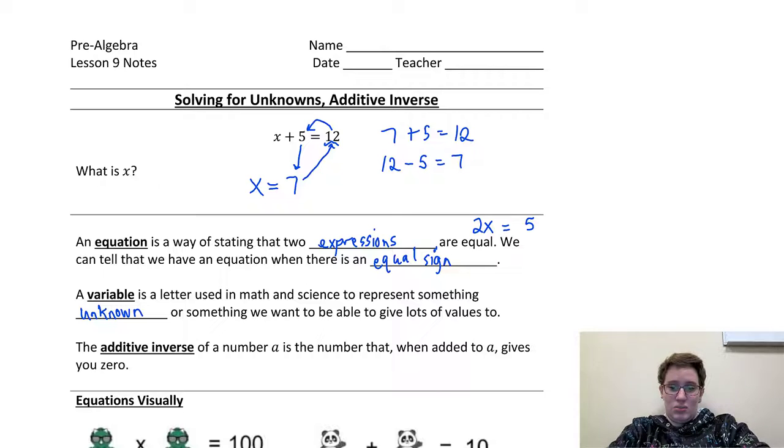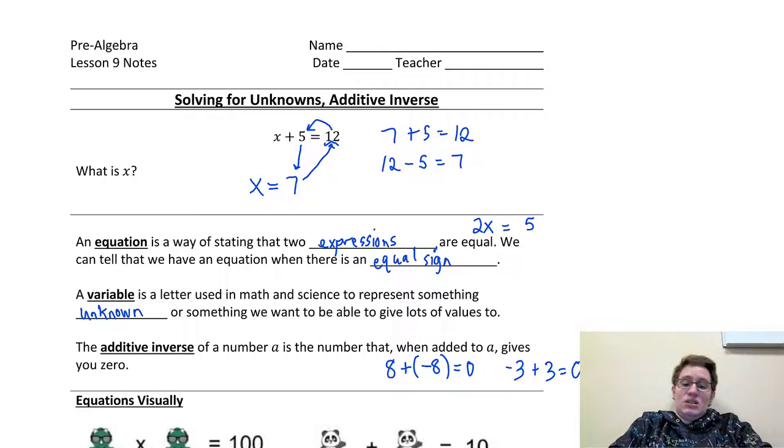The additive inverse of a number a is the number that, when added to a, gives you 0. So, the additive inverse of 8 is negative 8, because if I do 8 plus negative 8, I get 0. The additive inverse of negative 3 is positive 3, because negative 3 plus 3 is 0. So, today's equations are going to have us end up using this idea of an additive inverse, basically so that we can move what's around x, so that it ends up just being x equals something.